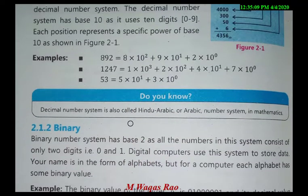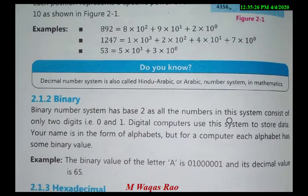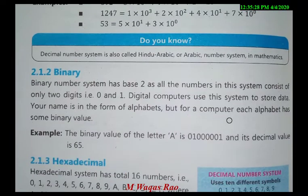The decimal number system is also called the Hindu-Arabic or Arabic number system in mathematics. As you know, computers can only understand digital types of data. Next, we will talk about the binary number system.